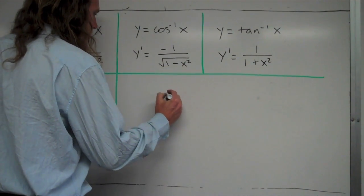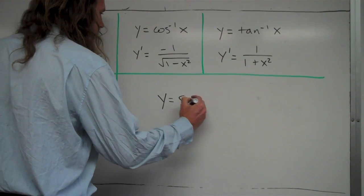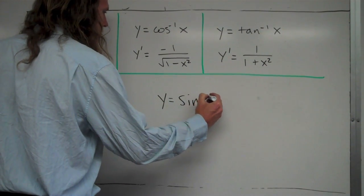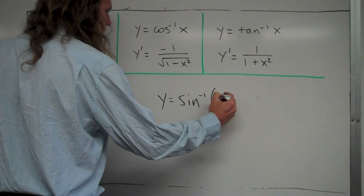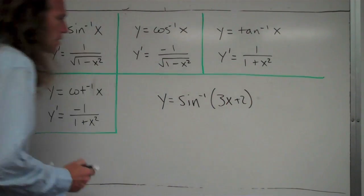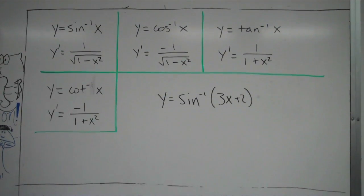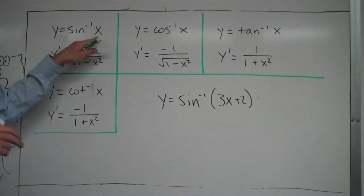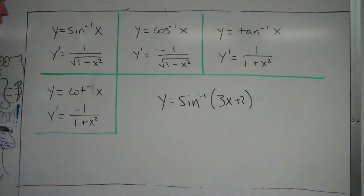you had a function like this. So y is equal to inverse sine of, let's just start with something simple like 3x plus 2. So basically, I've just changed it. Instead of it just being x, I've changed it to now my inner function is 3x plus 2.